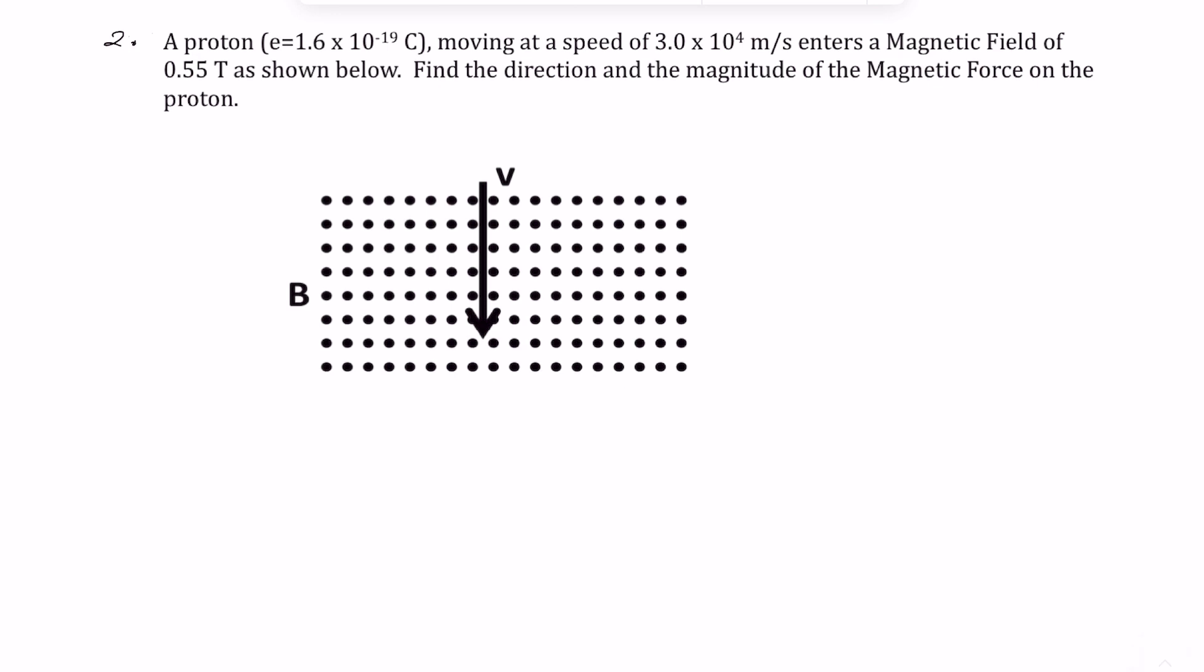Now we've got a proton moving at a speed of 3.0 times 10 to the 4 meters per second, and there's a magnetic field of 0.55 tesla as shown below. Find the direction and the magnitude of the magnetic force on the proton.